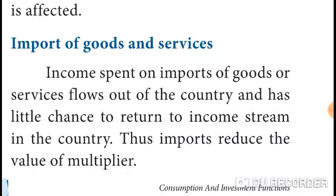The formula for the multiplier is: k equals delta Y divided by delta I — that is, the change in income divided by the change in investment.